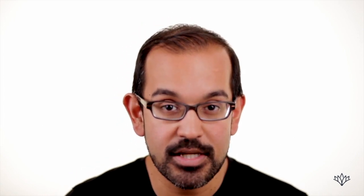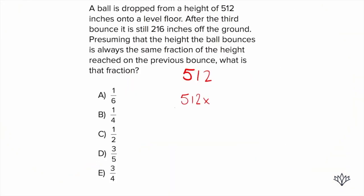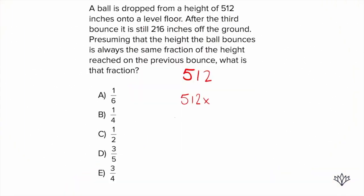Let's take that step by step. We know that we have 512 times a fraction, and we're going to do it again and again, and our end result needs to be 216. So we start with 512, and we're multiplying by a fraction — let's call that fraction x. After the first bounce, we have 512x. Then we multiply by that same fraction again, giving us 512x squared for the second bounce.